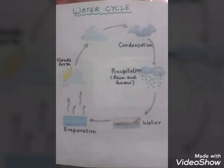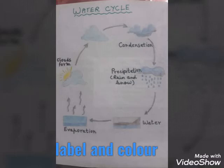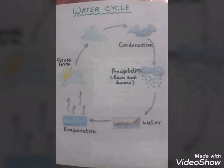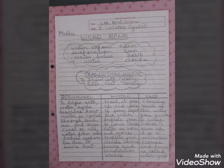At the back of this page you will draw the diagram of a water cycle. You can use your literature book to draw the diagram. Don't forget to label and color the diagram properly.